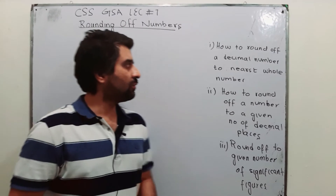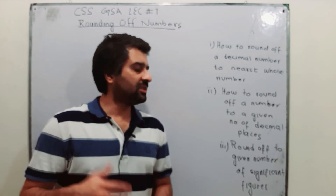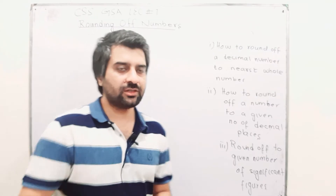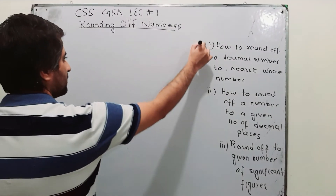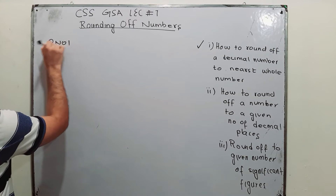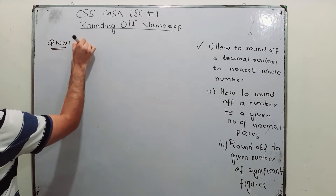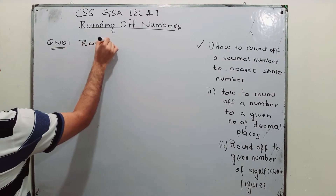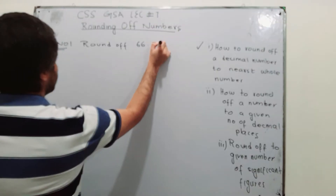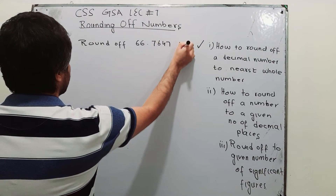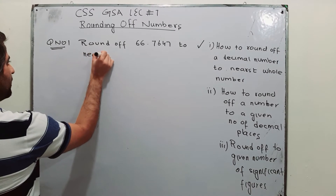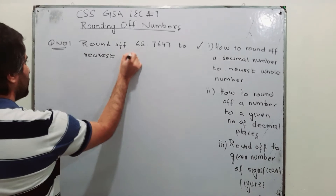Starting from how to round off a decimal number to the nearest whole number. Let us take a question about it. Question number one: round off 66.7647 to the nearest whole number.